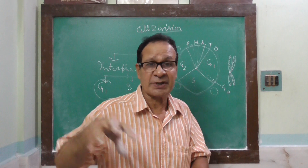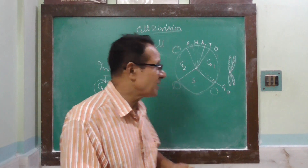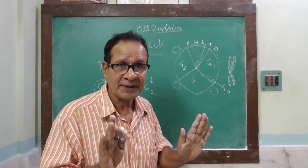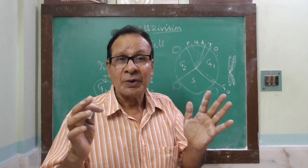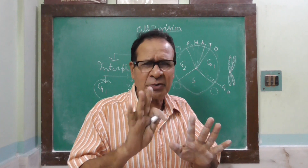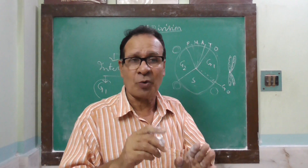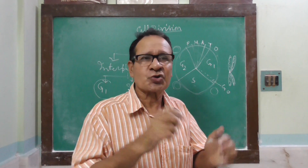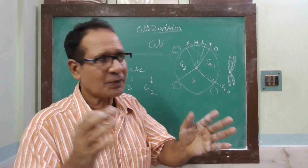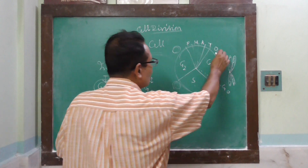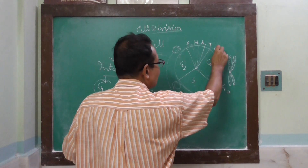Synthesis of ATP and its storage for the supply of energy occurs. And in the animal cell, another phenomenon occurs: the centrioles of each centrosome divide into two, so each centrosome now contains four centrioles. This is the interphase. The major part of the cell cycle is occupied by interphase.